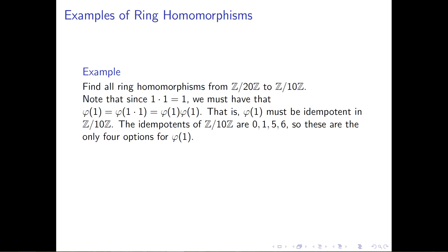So the idempotents of ℤ mod 10 are 0, 1, 5, and 6. That's something you can check. And so these are the only four options for where we could send φ of 1.